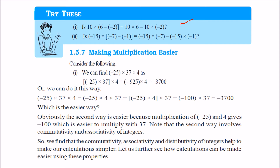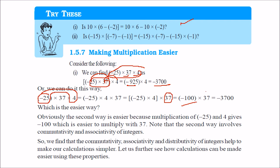How to make multiplication easier? These properties are very beneficial and handy for computation. For example, to multiply minus 25 with 37 with 4: instead of multiplying minus 25 with 37 first to get minus 2925 and then multiplying by 4, we can first take minus 25 and 4 together, giving minus 100. Then minus 100 into 37 is just minus 3700 — you just add zeros. So we can use commutativity, associativity, and distributivity to make multiplication easier.